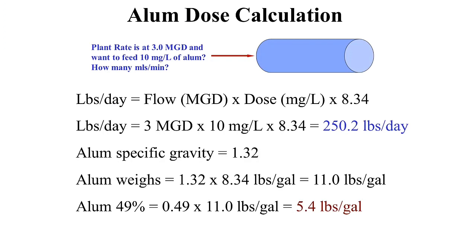Now we need to convert the 250 pounds per day to our specific chemical, which is 49% alum. We multiply the specific gravity of alum, which is 1.32, times 8.34 — the weight of one gallon of water — and determine that a gallon of alum weighs 11 pounds. But only 49% of alum is aluminum sulfate.